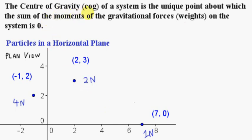In the last video, we saw that the center of gravity of a system is the unique point about which the sum of the moments of the gravitational forces, or weights, on the system is zero. Let's look at this example here. We have a system consisting of three particles. These three particles are part of a horizontal triangle, so we are actually looking down on the system here.